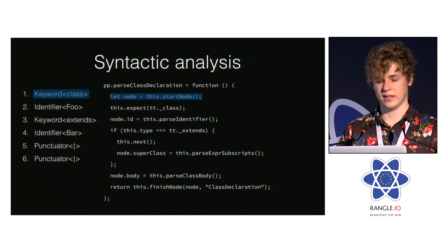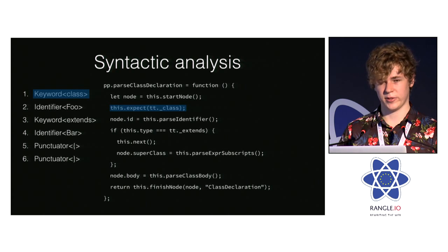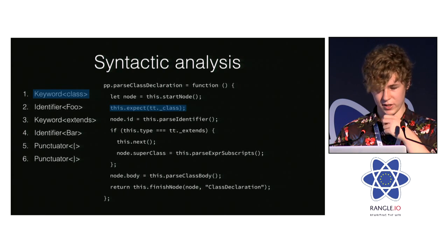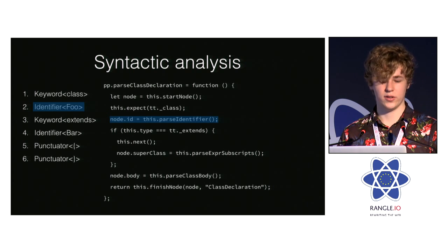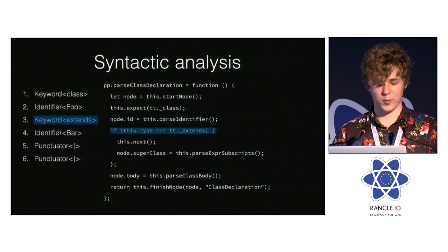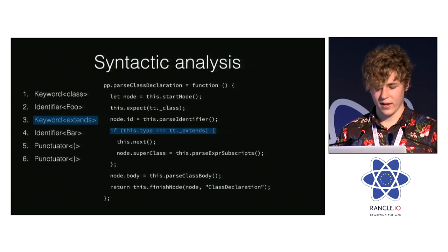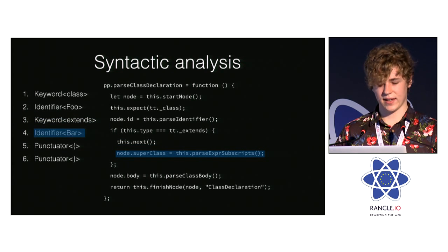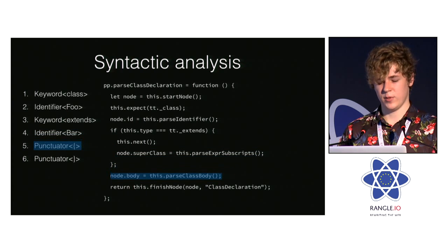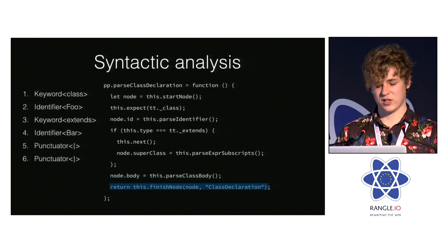We expect the current token to be a class token — if it's not, we throw a syntax error. Luckily, it is. We then progress to the identifier token, running parseIdentifier to add an ID node to the class node. Next we check if the next token is an extends keyword — extends is optional, so there's a simple if statement. If there is an extends keyword, we advance to the next token, parse the superclass as an expression, and add that to the node. Then we move to the parseClassBody method, which handles class methods, properties, getters, and setters. Finally, we finish the node, giving it a type and an end position.